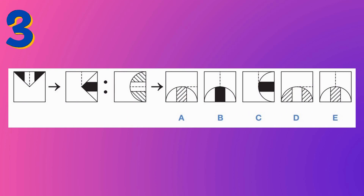Question three — you can pause to try on your own. The first pattern is transformed into the second: the dotted line stays in the same place, but the triangle has moved clockwise and the colors are interchanged — black becomes white and white becomes black. Applying this to the third pattern, the dotted line should remain in the same position. Only options A and D have the dotted line in the same place, so we can rule out B, C, and E.